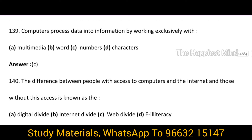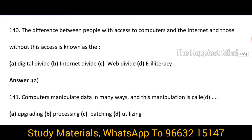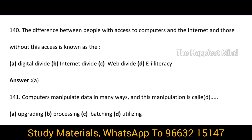Question 139: Computers process data into information by working exclusively with — option C: Numbers. Question 140: The difference between people with access to computers and the internet and those without this access is known as the digital divide.